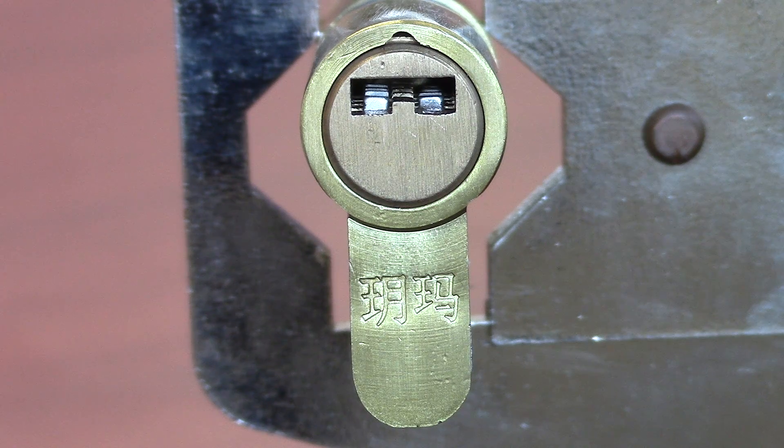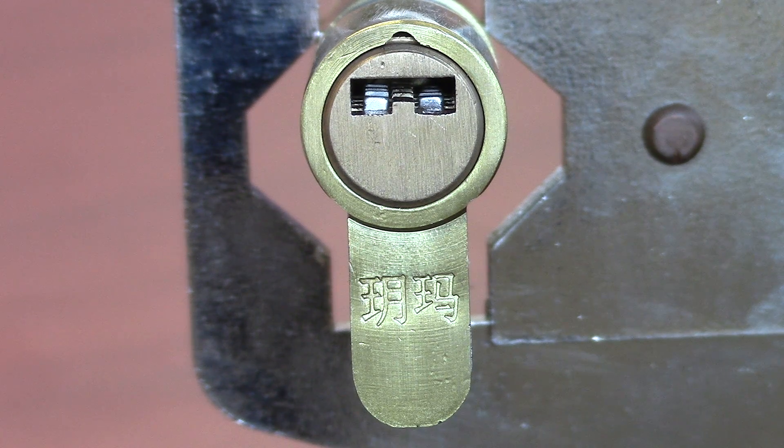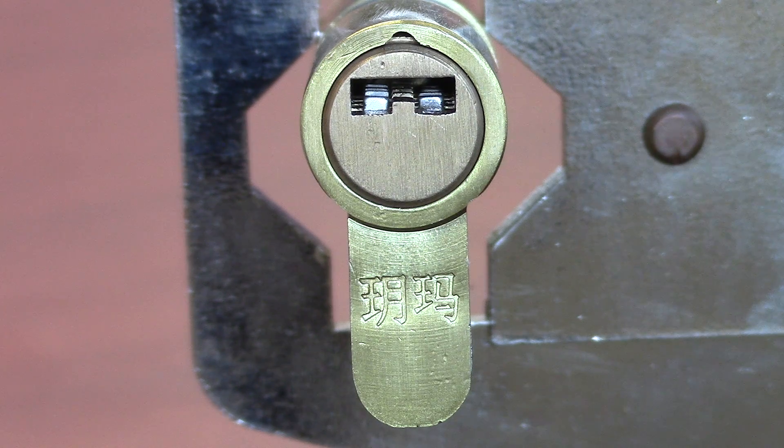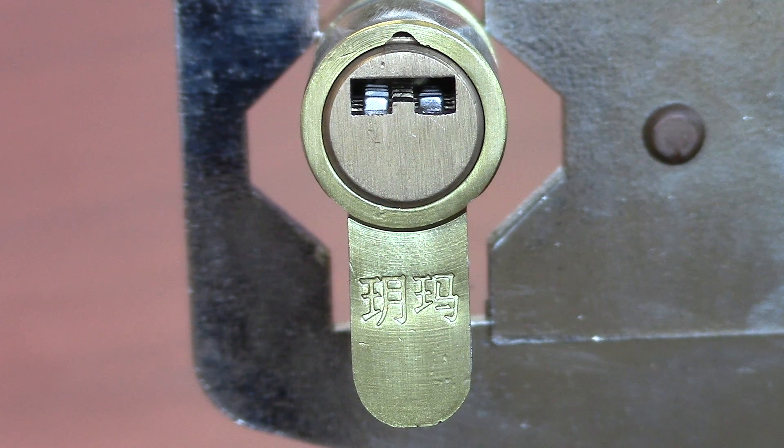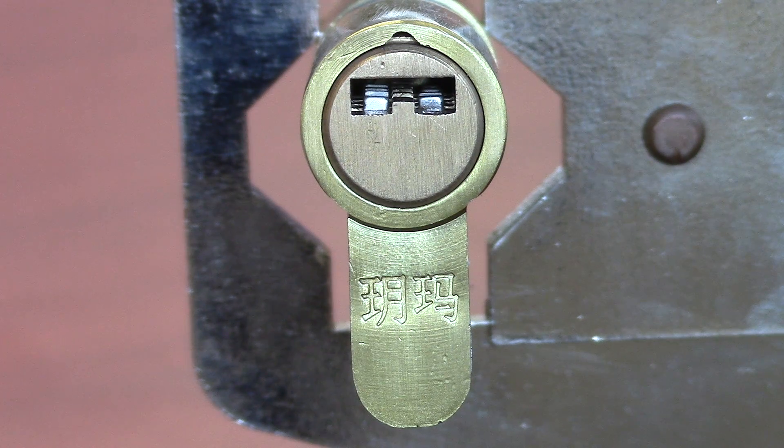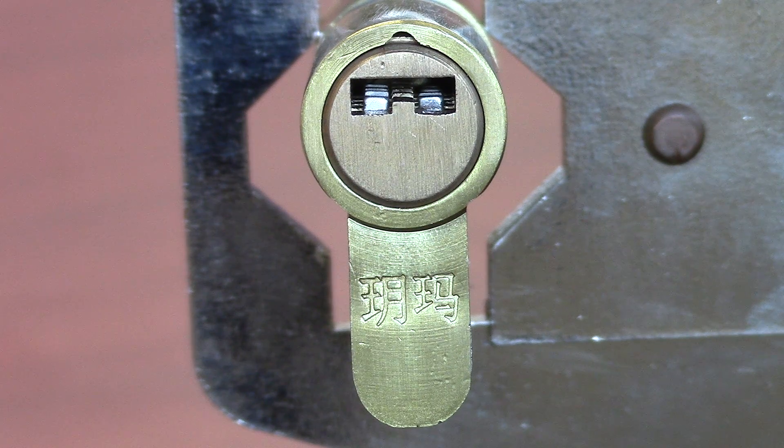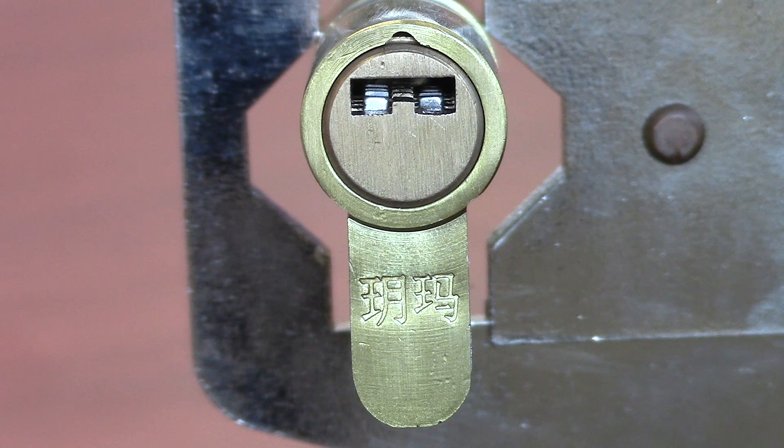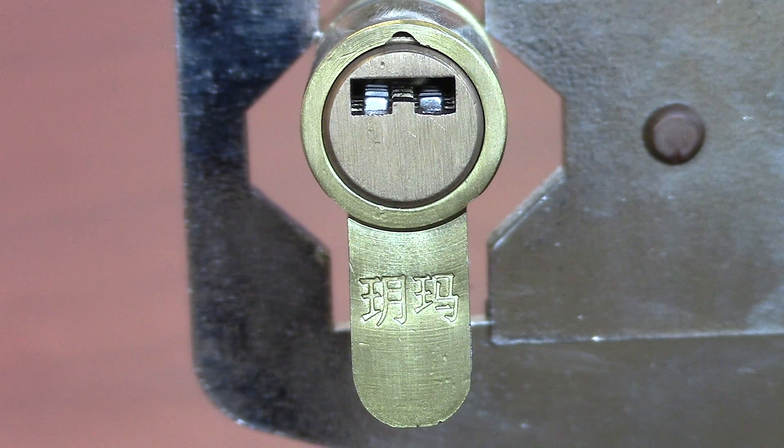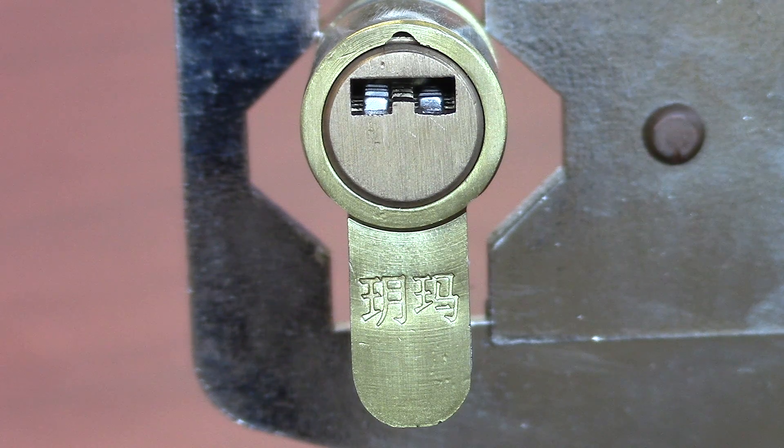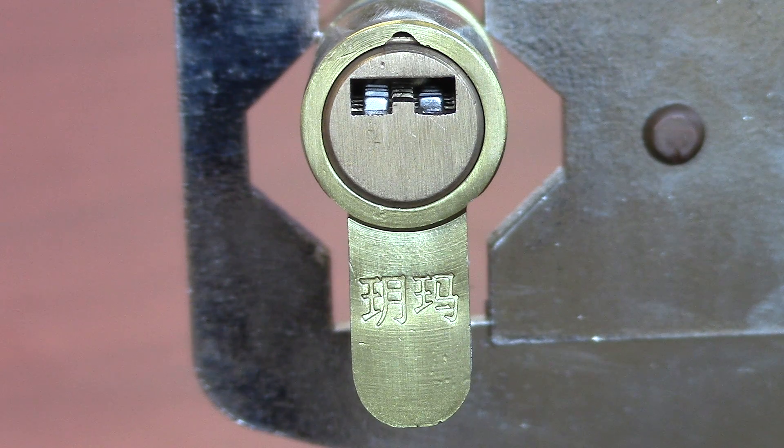How they achieved that is that anything you insert into the keyway will actually turn the plug. Traditionally, if you turn the plug you have opened the lock, but not in the case of Yuema. Anything will turn the plug, but only the correct key will also turn the cam. The cam is the black part of the lock that will actually open the door and operate the internal lock.